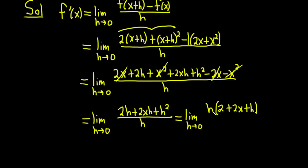And the whole thing checks. h times 2 is 2h. h times 2x is 2xh. h times h is h squared. And all of this is being divided by little h, which now cancels. Very nice.